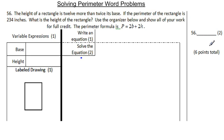So let's see what we can do here with reading. The height of a rectangle is 12 more than twice its base. If the perimeter of the rectangle is 234 inches, what is the height of the rectangle? Use the organizer below and show all of your work for full credit. The perimeter formula is P = 2b + 2h.